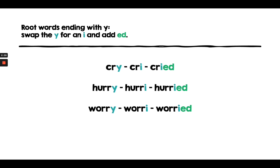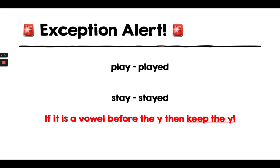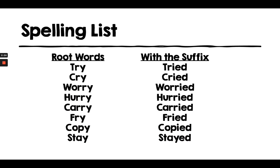So to recap then, for most root words that end with a y, we swap the y for an i and add ed. However, where there is a root word that has a vowel before the y, we keep the y. So that's something we'll need to practice, and that's why you'll see in our spelling list this week — just to trip us up a little bit — I've added in stay, which doesn't follow the rule the rest of them follow.